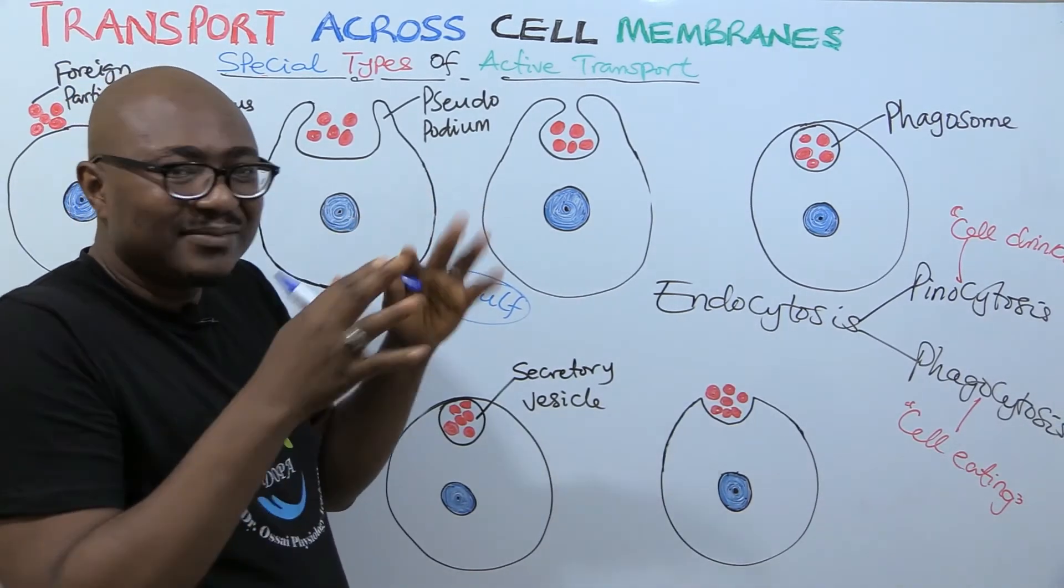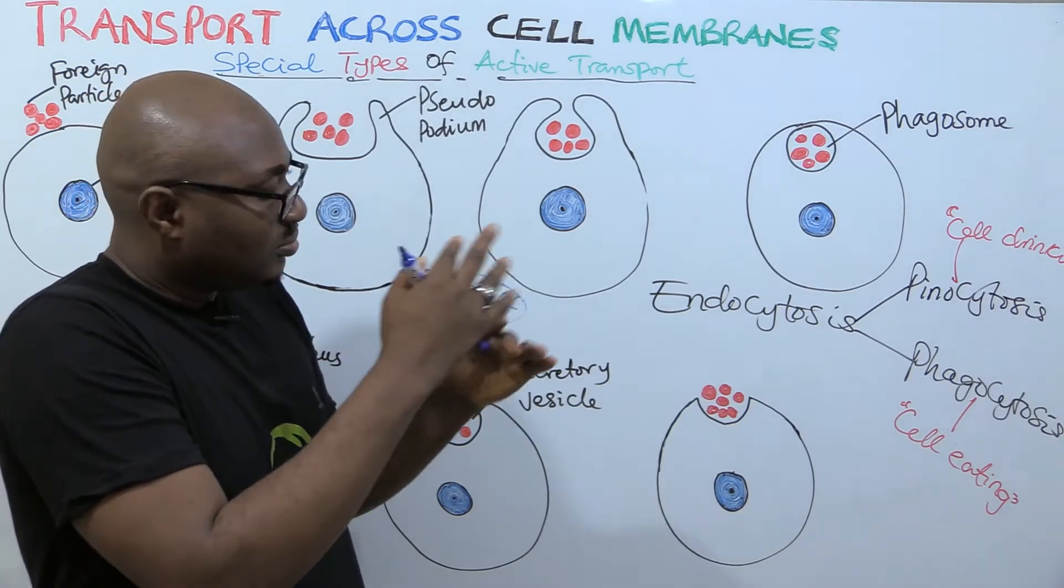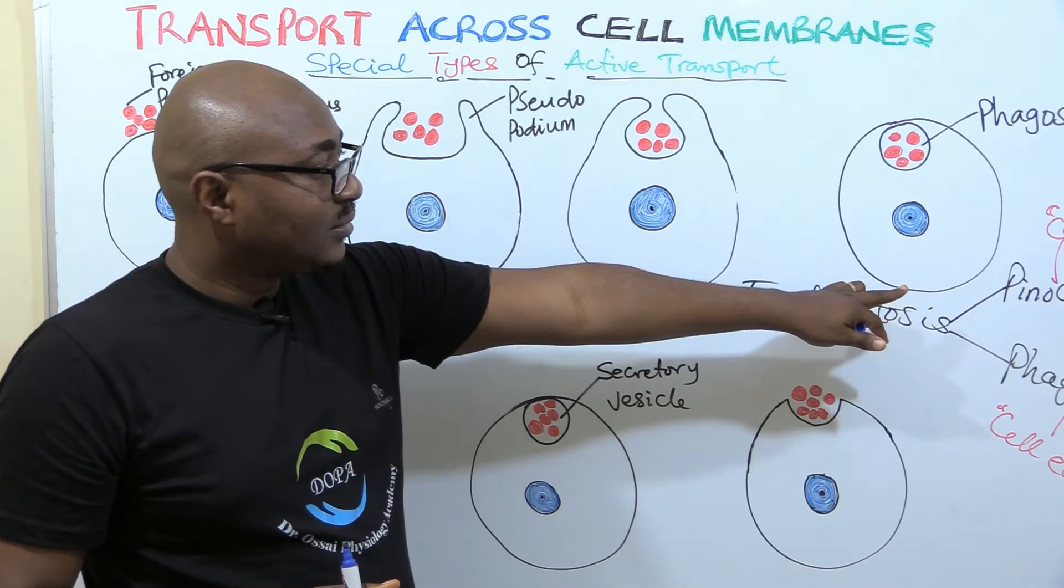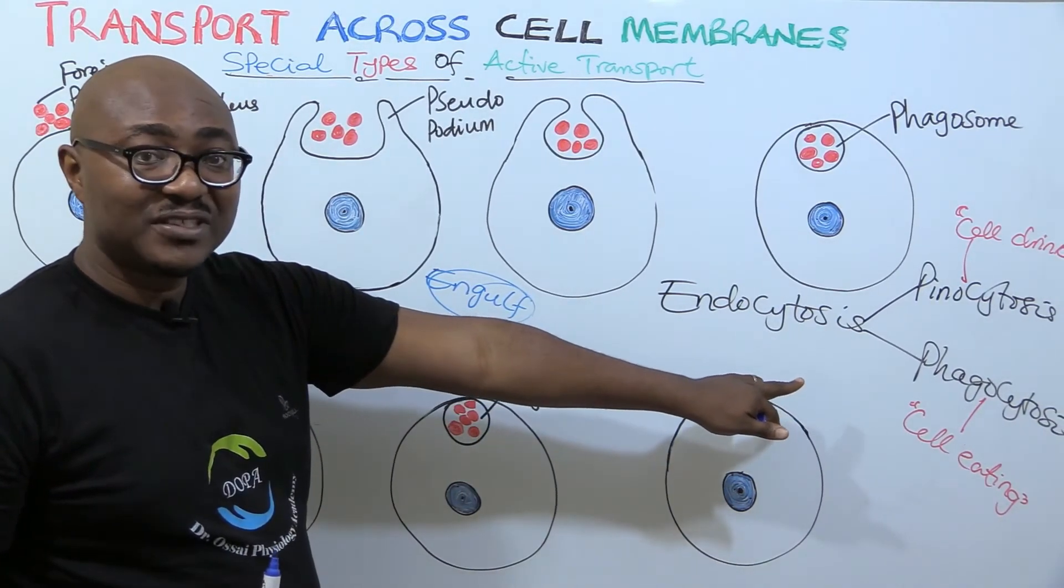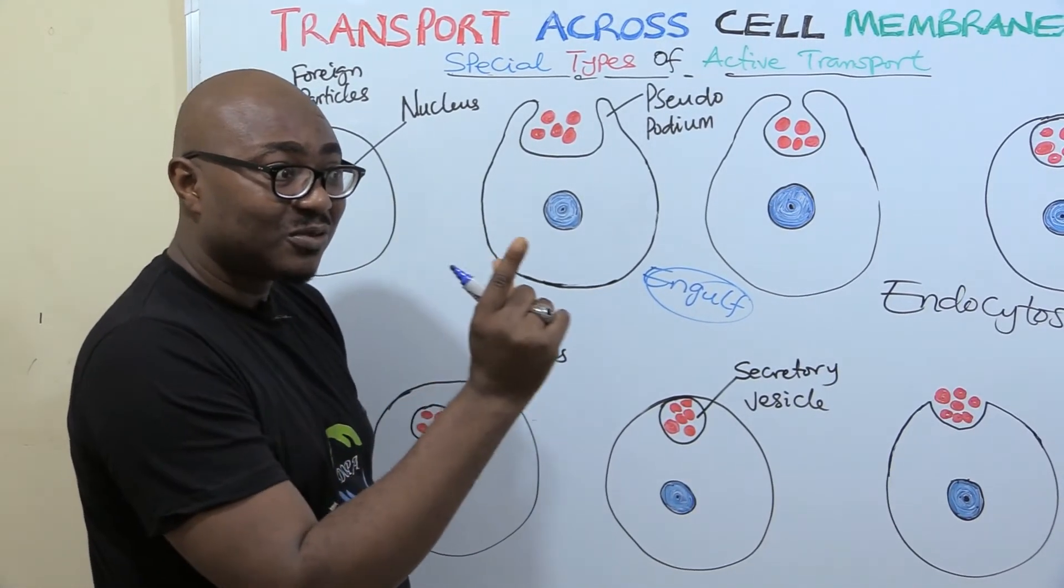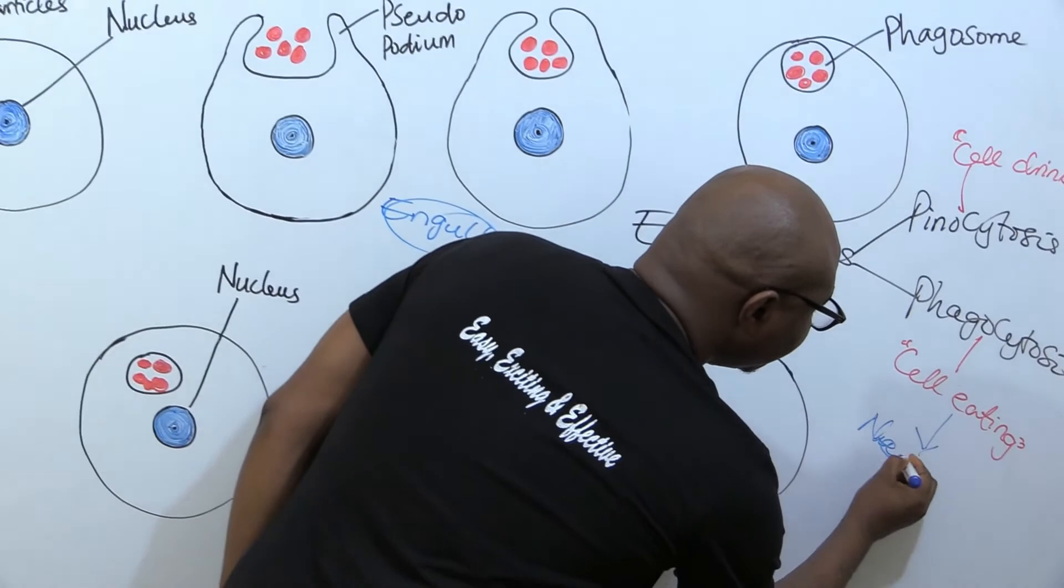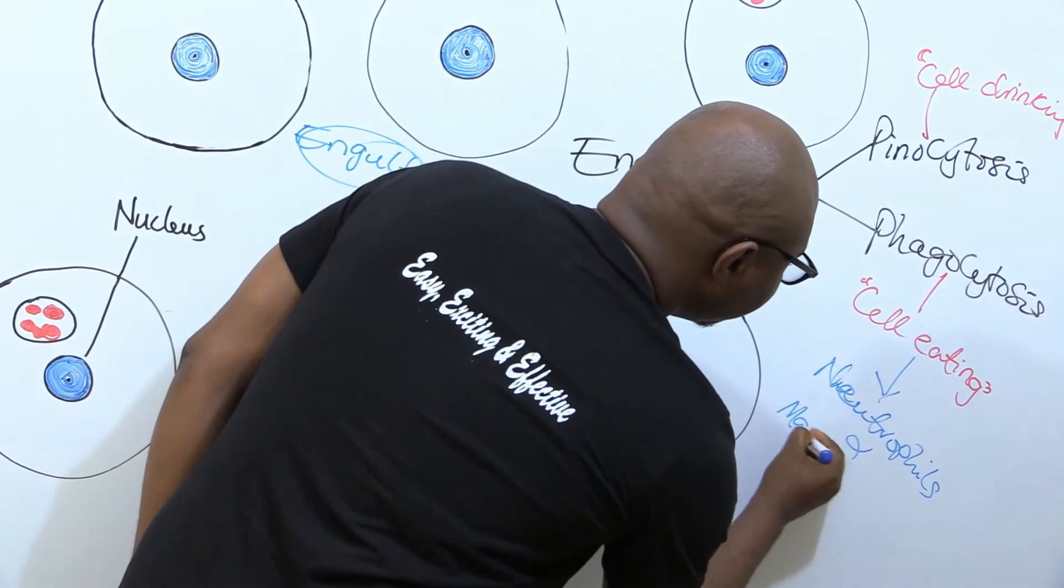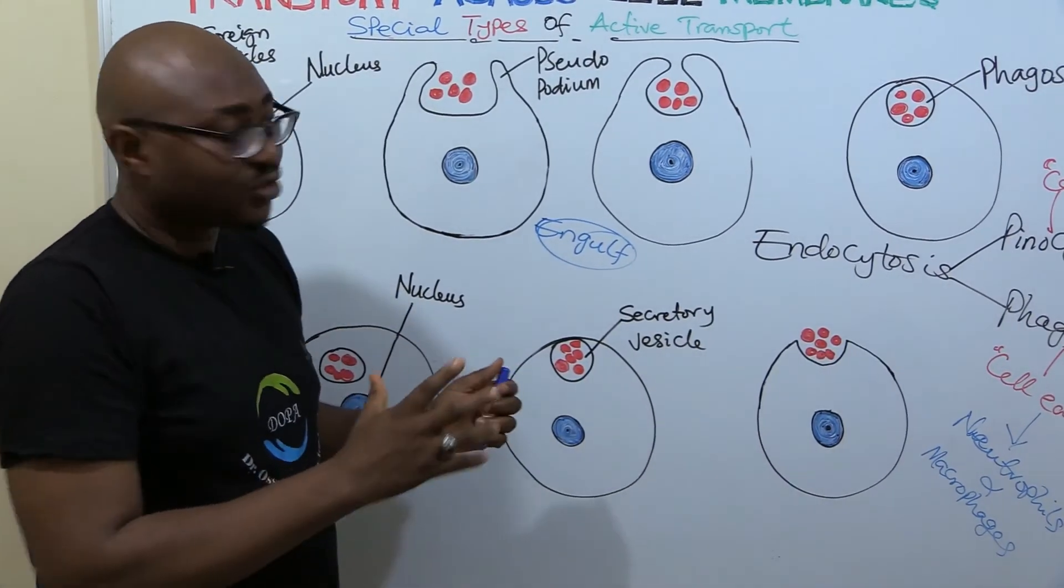But phagocytosis is mainly solid particles that are bigger. They are usually bigger particles than the one that goes through cell drinking. Solid particles like cellular debris, particles, wasted, broken parts of cell, cell debris. And also like bacteria. So while most cells, almost every cell undergoes pinocytosis, only very few cells do this phagocytosis. And what are those cells? White blood cells. Not just all white blood cells, mainly neutrophils and macrophages.